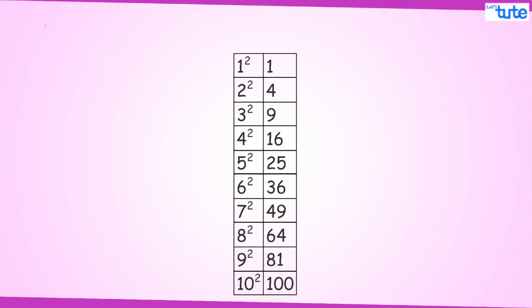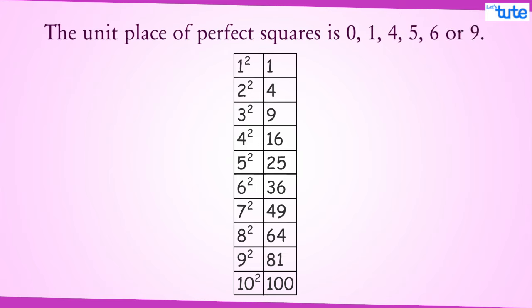You all must be aware of squares of 1 to 10, right? So let's just write it down. As we can see, the unit place of perfect squares is 0, 1, 4, 5, 6 or 9.